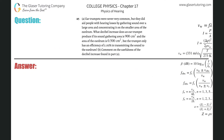Number 27, letter A. Ear trumpets were never very common, but they did aid people with hearing losses by gathering sound over a large area and concentrating it on a smaller area of the eardrum. What decibel increase does an ear trumpet produce if its sound gathering area is 900 centimeters squared, the area of the eardrum is 0.5 centimeters squared, and the trumpet only has an efficiency of 5% in transmitting the sound to the eardrum?